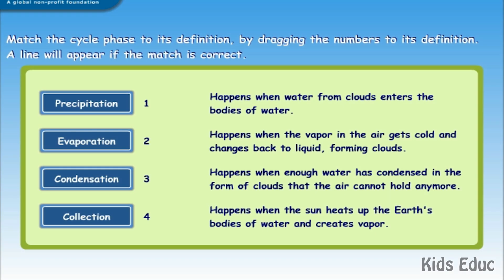Match the cycle phase to its definition by dragging the numbers to its definition. A line will appear if the match is correct.